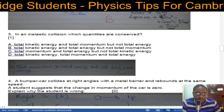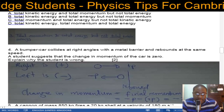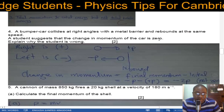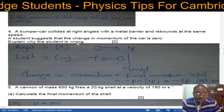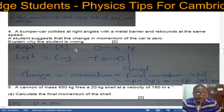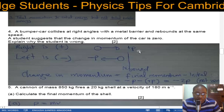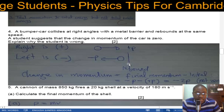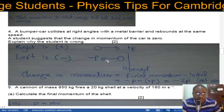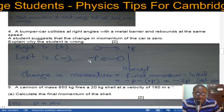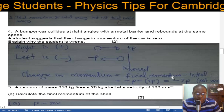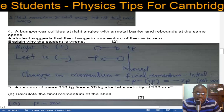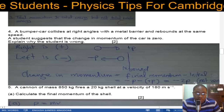Number four: a bumper car collides at right angles with a metal barrier and rebounds at the same speed. A student suggests the change in momentum is zero — explain why the student is wrong. Taking rightward as positive, initial momentum is +p. After rebounding at the same speed, final momentum is −p. Change in momentum = final minus initial = −p − p = −2p. So it is not zero.